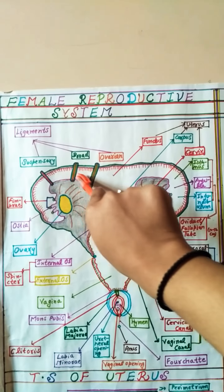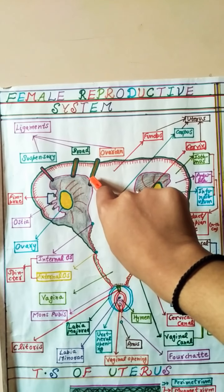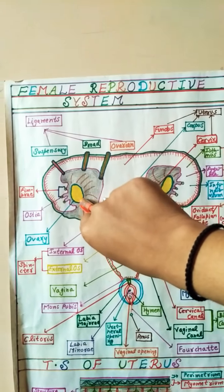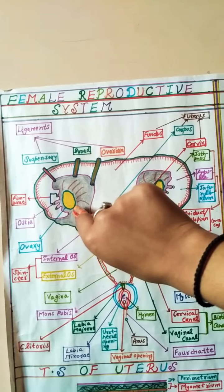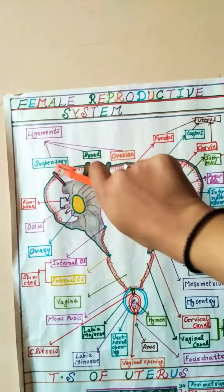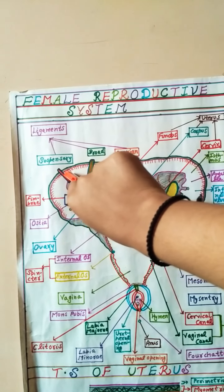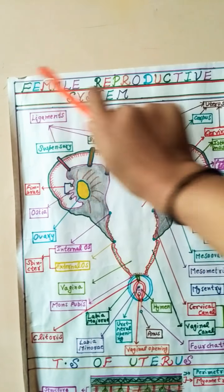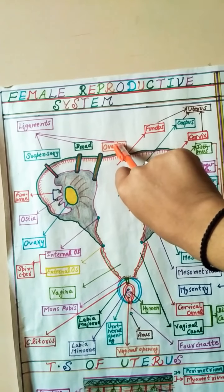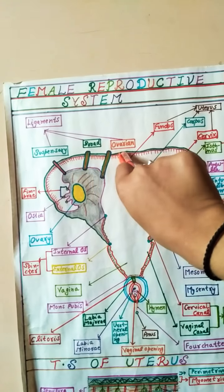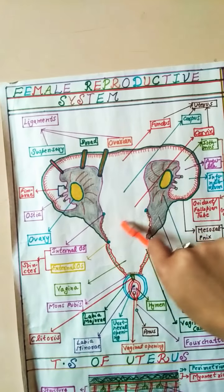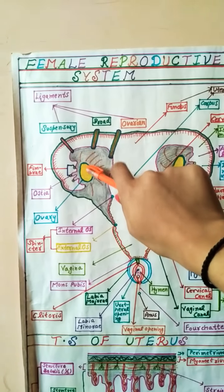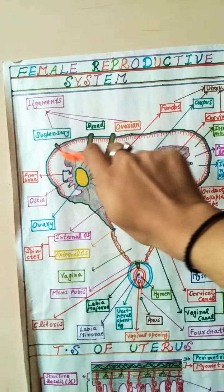The ovary is held in position with the help of three ligaments. The suspensory ligament attaches the ovary to the lateral wall of the pelvic girdle. The ovarian ligament attaches the ovary to the lateral wall of the uterus. The broad ligament attaches the ovary to the lower portion of the abdominal wall.